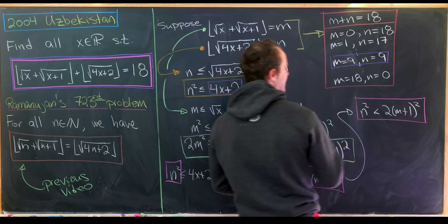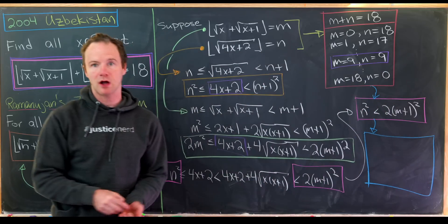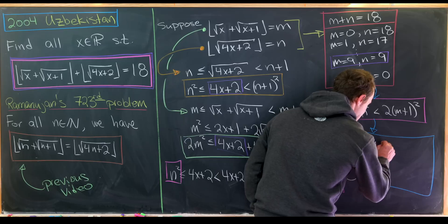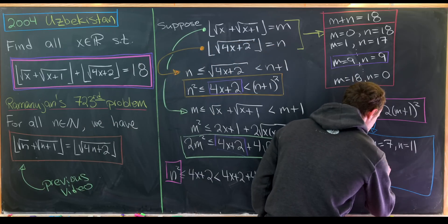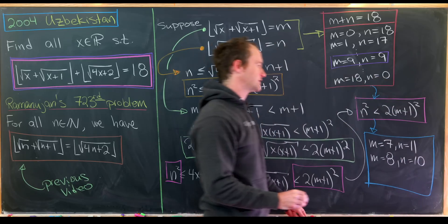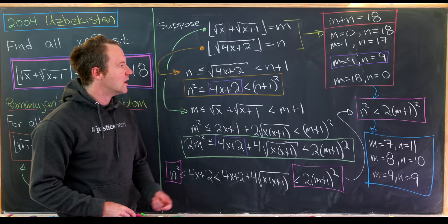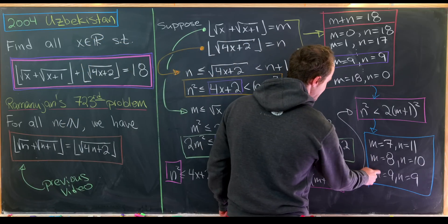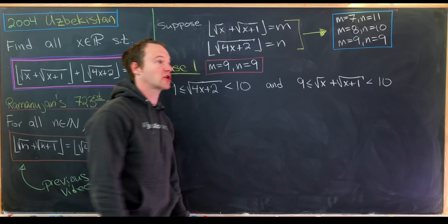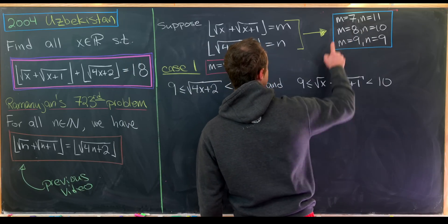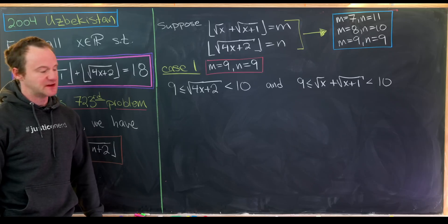Applying the condition n² < 2(m+1)² to all 19 pairs, we end up with a much smaller list. The remaining possibilities are: m equals 7 and n equals 11; m equals 8 and n equals 10; and m equals 9 and n equals 9. Let's check each of those individually.